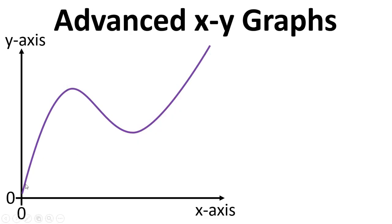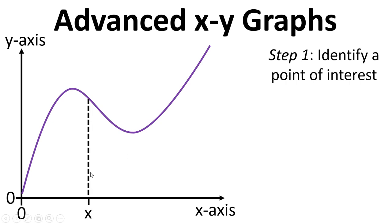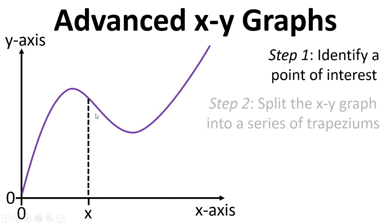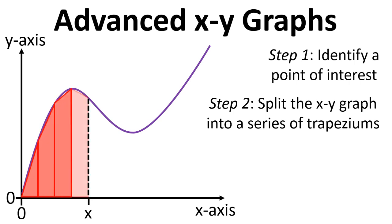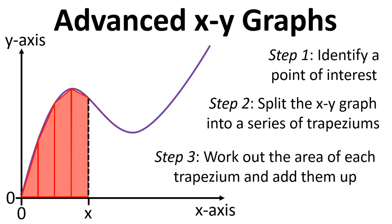What if we don't have a straight line, what if we have a curve that does something like this? It gets a bit more complicated. So the first thing that we need to do is identify a point of interest, so we need to go from some point from 0 to point x, and then we need to split the graph up into a series of trapeziums. We can then work out the area of each trapezium and add them up, and that will give us the area under the curve.